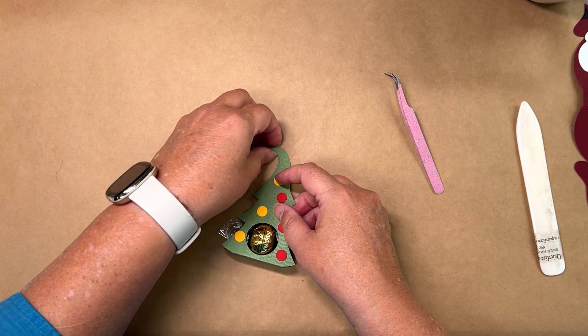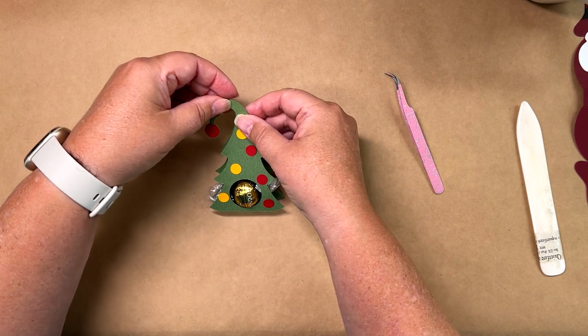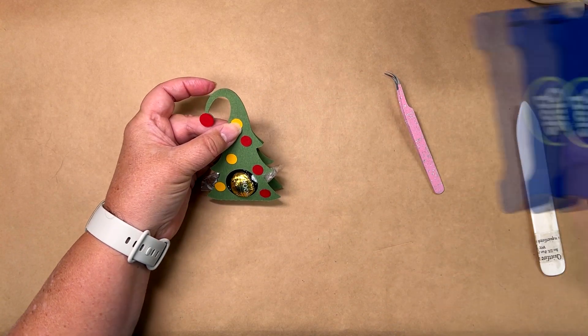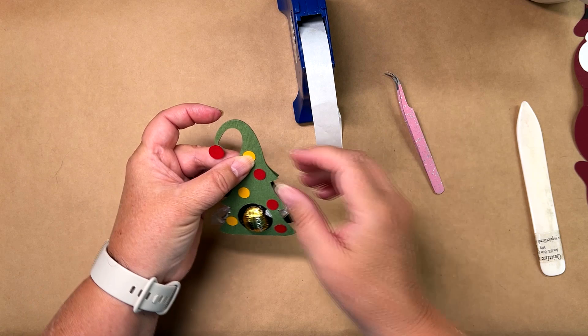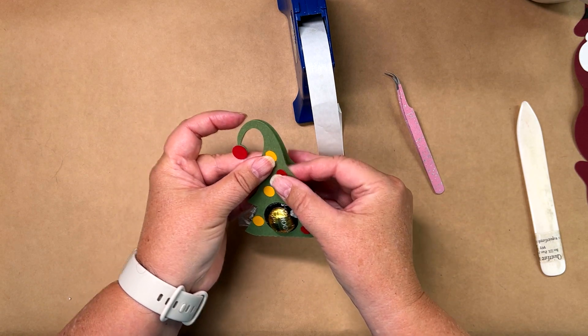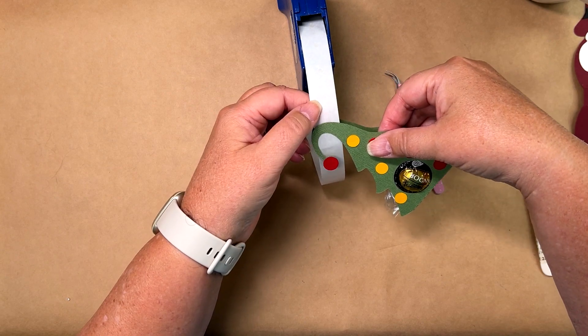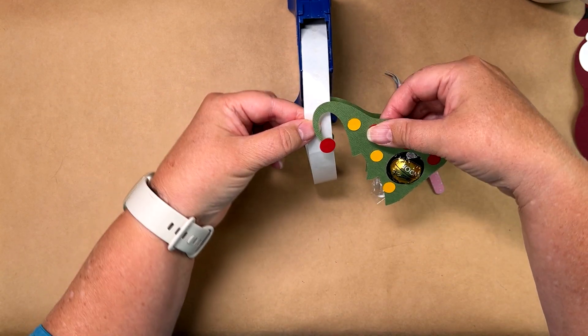Okay, so when you attach the top, because that's how you keep the candy inside, I try not to put any adhesive right up at the top. And I'll tell you why in a minute. Now these are glue dots and I kind of like the glue dots for sealing the back and the front together.